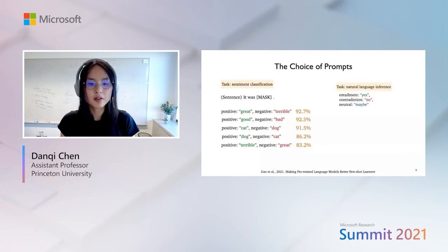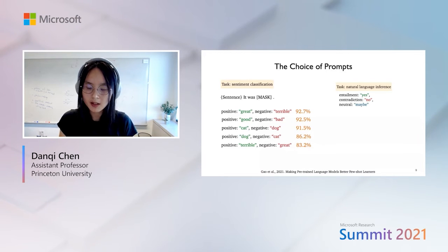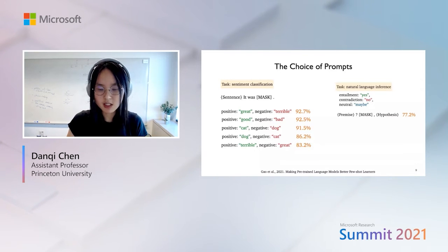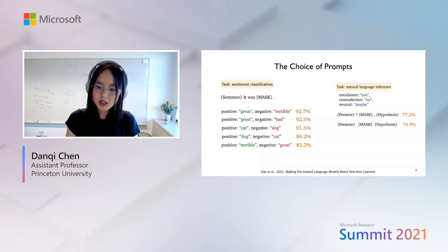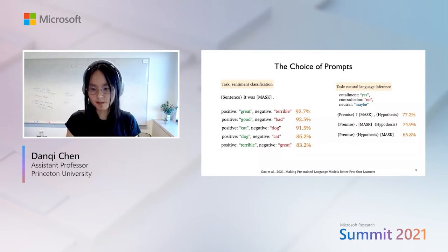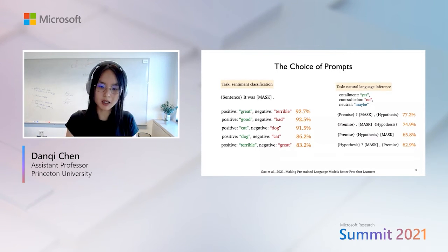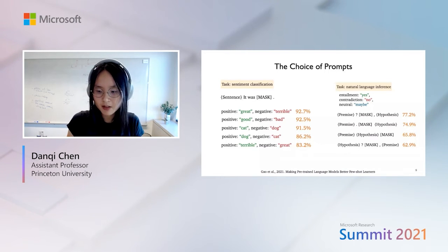Let's look at another example: natural language inference, where we predict whether the relationship between premise and hypothesis is entailment, contradiction, or neutral, using label words yes, no, and maybe. Starting with the template "[premise]? [MASK], [hypothesis]" achieves 77.2% accuracy. However, simply removing a comma drops the accuracy quite a bit. Putting both premise and hypothesis before the mask token drops it significantly. And swapping the order to "[hypothesis]? [MASK], [premise]" achieves only 62.9% accuracy. This really shows that the choice of templates and label words is very important.